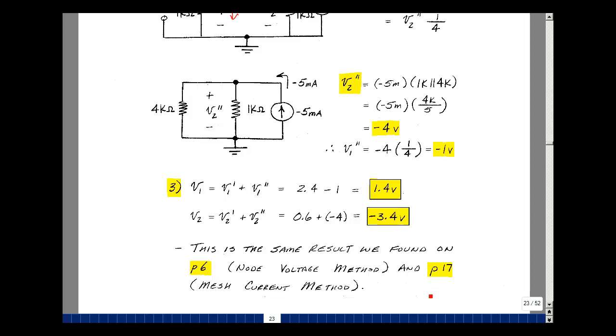Now this might seem like it's more work, but realize when you open and short things, the circuit gets a lot simpler. Sometimes that makes the circuit very easy to analyze using our shortcut techniques like current divider, voltage divider, and so on. And this is the principle of superposition, an example using it.